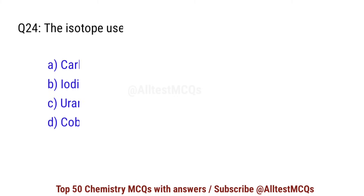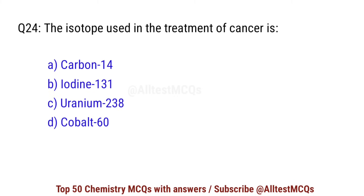Question number 24. The isotope used in the treatment of cancer is? Correct option is D: cobalt-60.